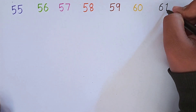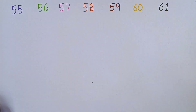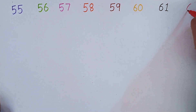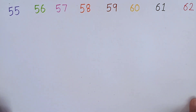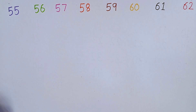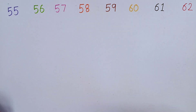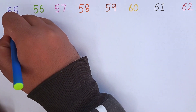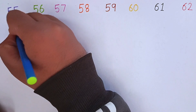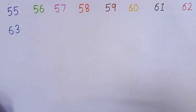After 60, the next number will be 61. Now I am writing 62. 6, 2 — 62. Again, repeat with me: 55, 56, 57, 58, 59, 60, 61, 62.